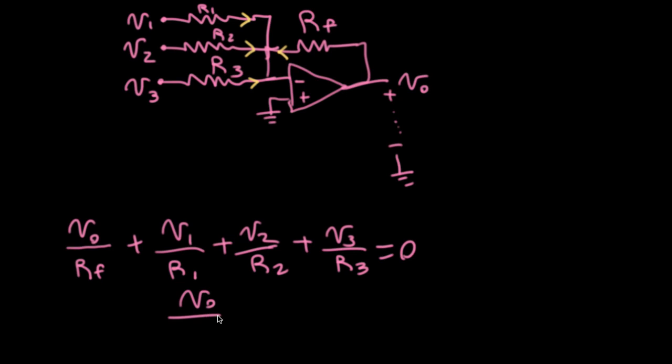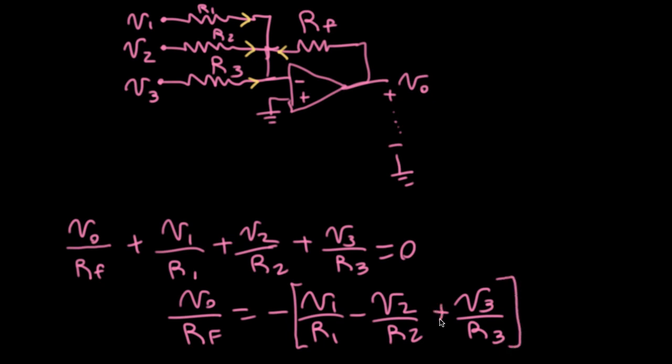What we'll do is we'll move everything over to the other side. So I have VO over RF equals minus V1 over R1 minus V2 over R2 minus V3 over R3. And you can easily see how this would extend if I wanted to have other inputs. Let me pull out the negative sign and also multiply both sides by RF so that the RF appears up here.